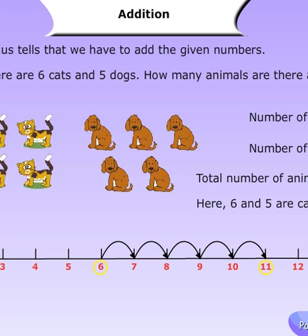See, the symbol plus tells that we have to add the given numbers. Here we have some puppies and here cats. The number of cats is 6, and the number of dogs is 5. 6 plus 5, we will get 11. So here, 6 and 5 are called the addends.